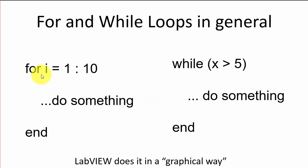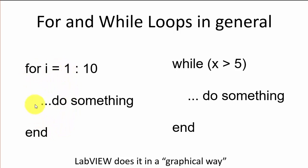First, a simple overview of for loops and while loops in ordinary text-based programming languages like Matlab, C-sharp, C, etc. Typically a for loop goes through a set of iterations — in this case from 1 to 10. Inside this for loop it does some coding. When it has gone through the loop 10 times, the for loop is finished and execution continues outside the loop.